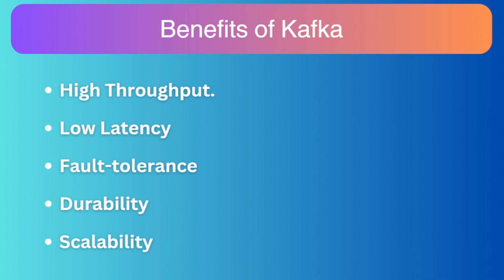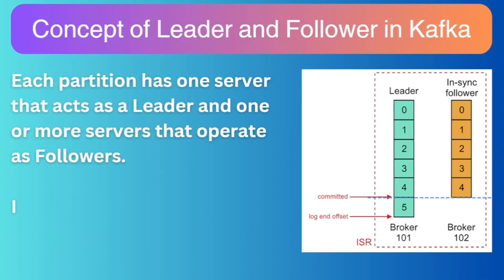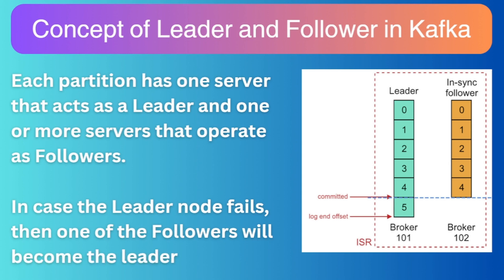The next question is: what is the concept of leader and follower in Kafka? In Kafka, each partition has one server that acts as a leader and one or more servers that operate as followers. The leader is in charge of all read and write requests for that particular partition, while the followers are responsible for passively replicating the leader. In case the leader node fails, one of the followers will become the new leader and start handling all read and write requests for that partition.